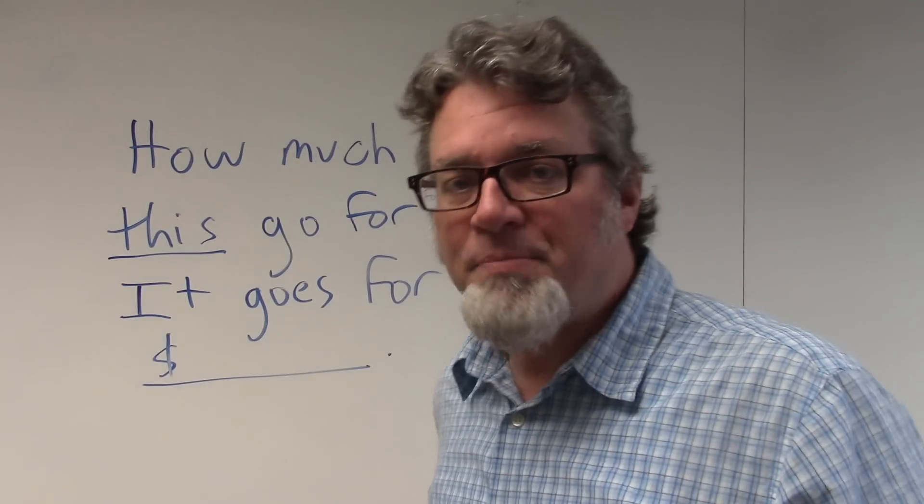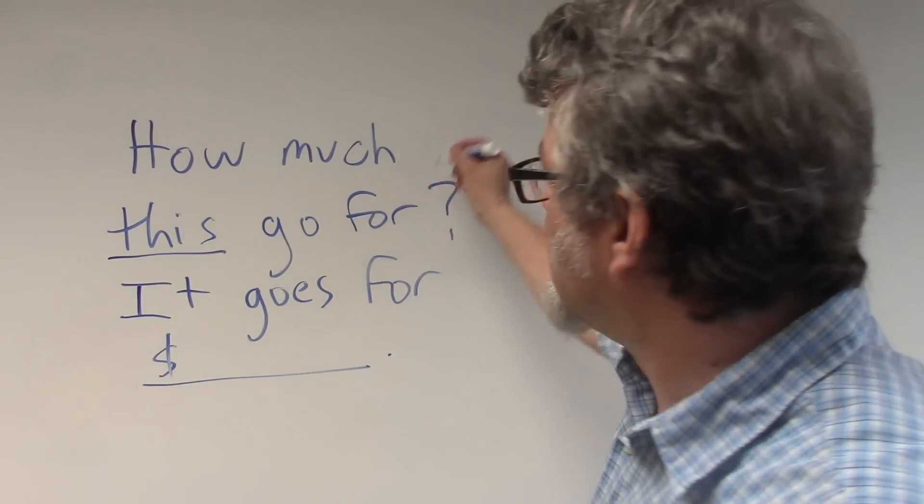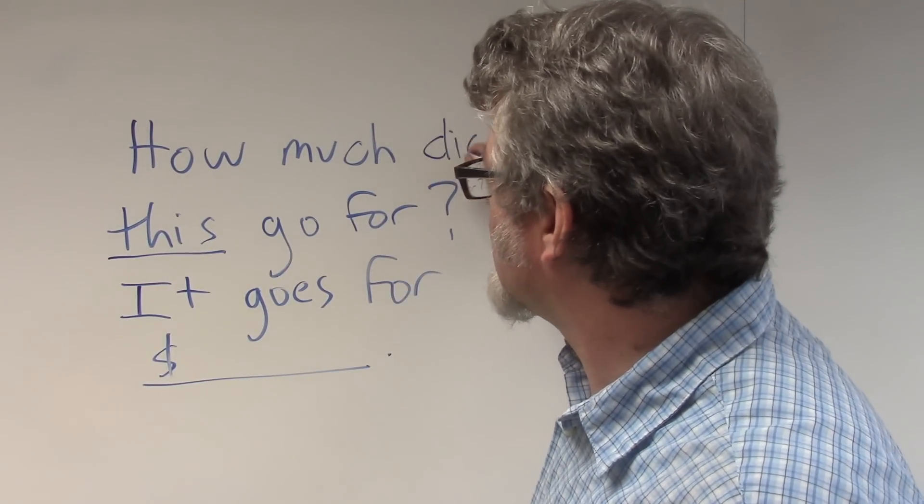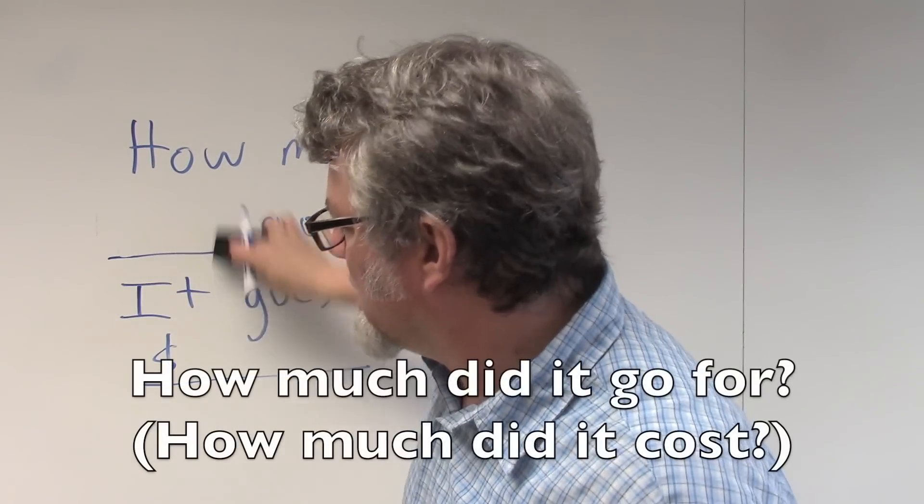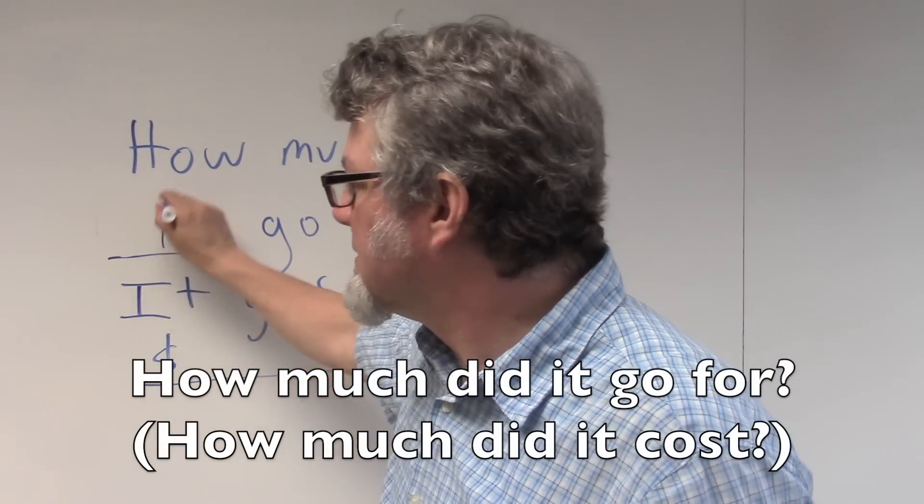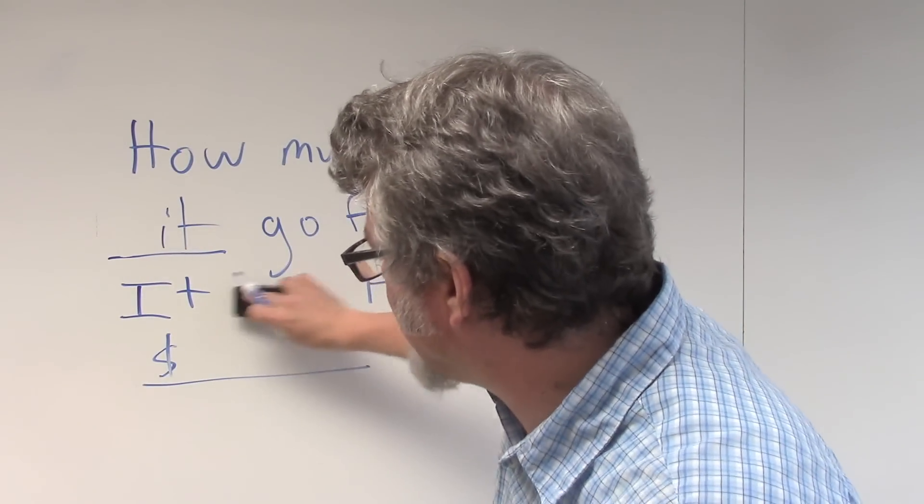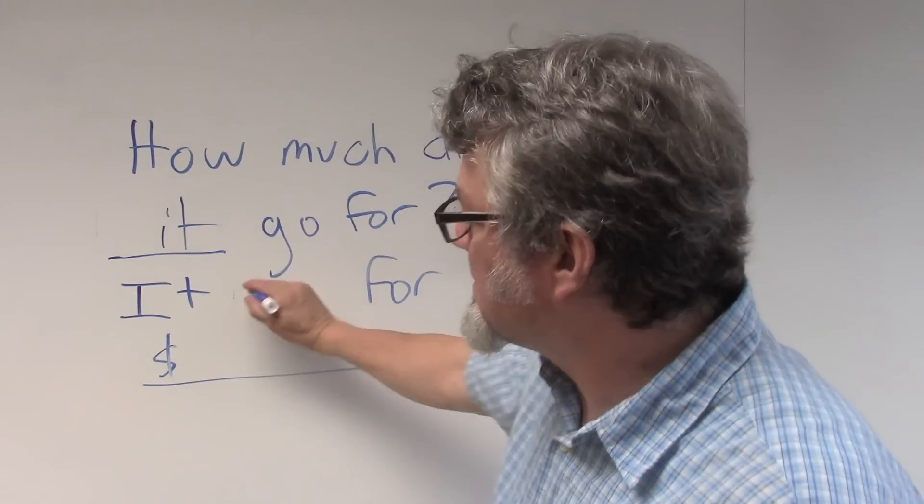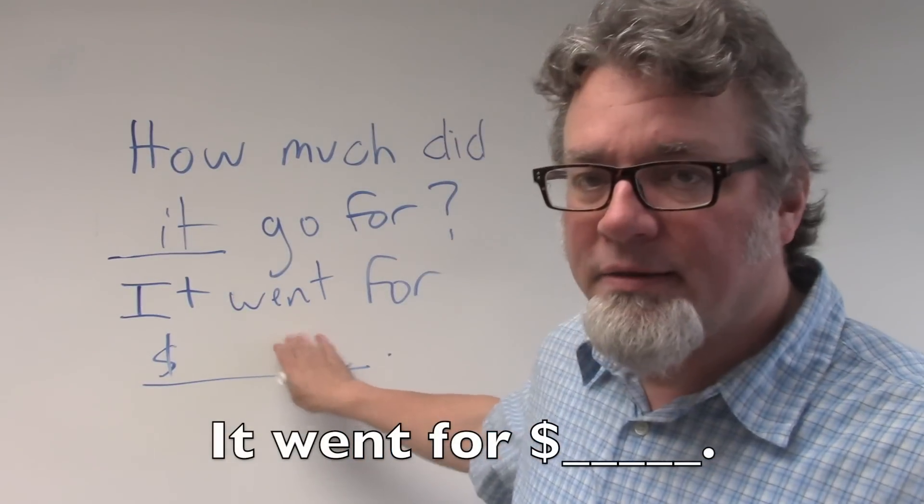To make the past tense, change the helping verb to did. How much did this, or you can just use it, go for. And the answer in the past tense would be, it went for, and then the dollar amount.